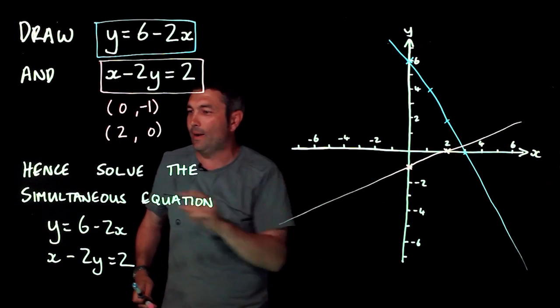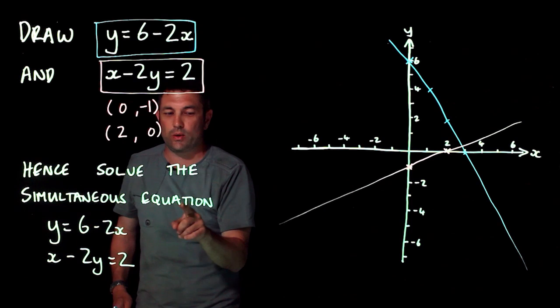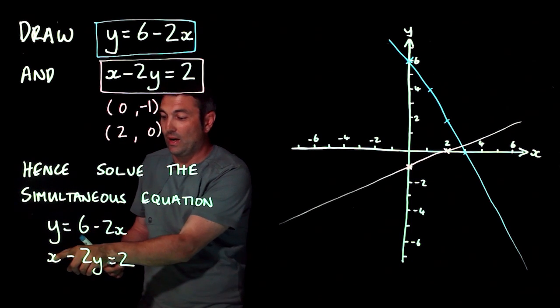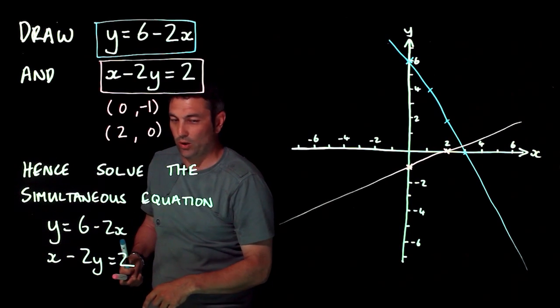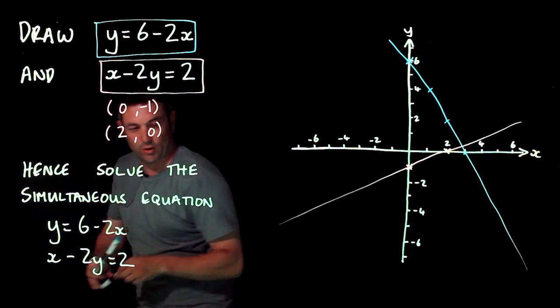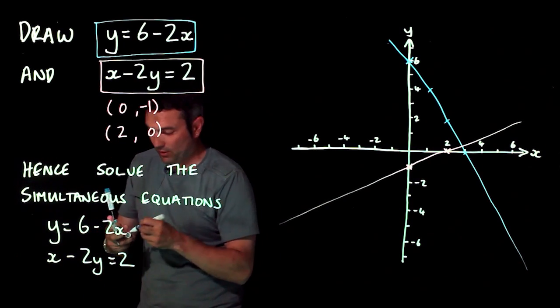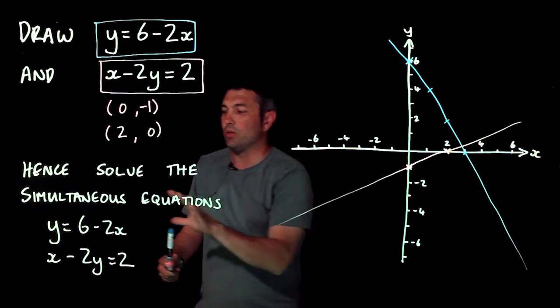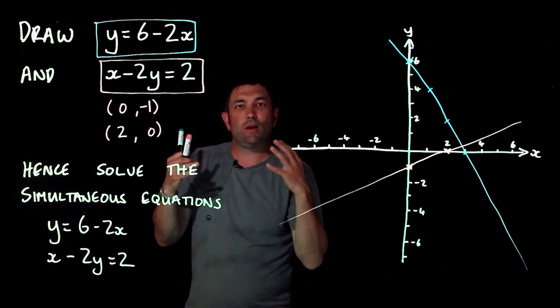Hence solve the simultaneous equations: y equals six minus 2x and x minus 2y equals 2. In fact I forgot to write an S on the end of equations so I'll write an S there. Now the solution to two simultaneous equations when they're drawn as graphs is the point at which they cross.